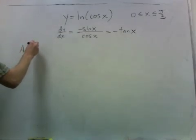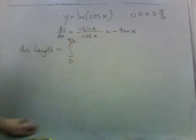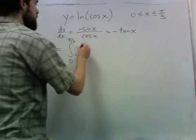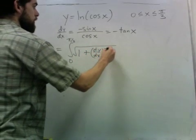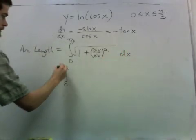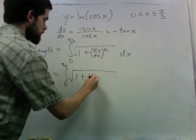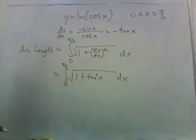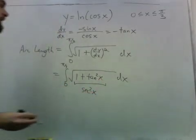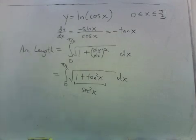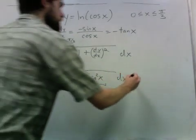The formula for the arc length was the integral on the interval we're talking about, of the square root of 1 plus the derivative squared. The derivative squared is just tangent squared. This should look like an identity to you because this is secant squared x. Secant is positive on the interval we're talking about, so the square root of this squared is the original thing. We don't have to introduce an absolute value.